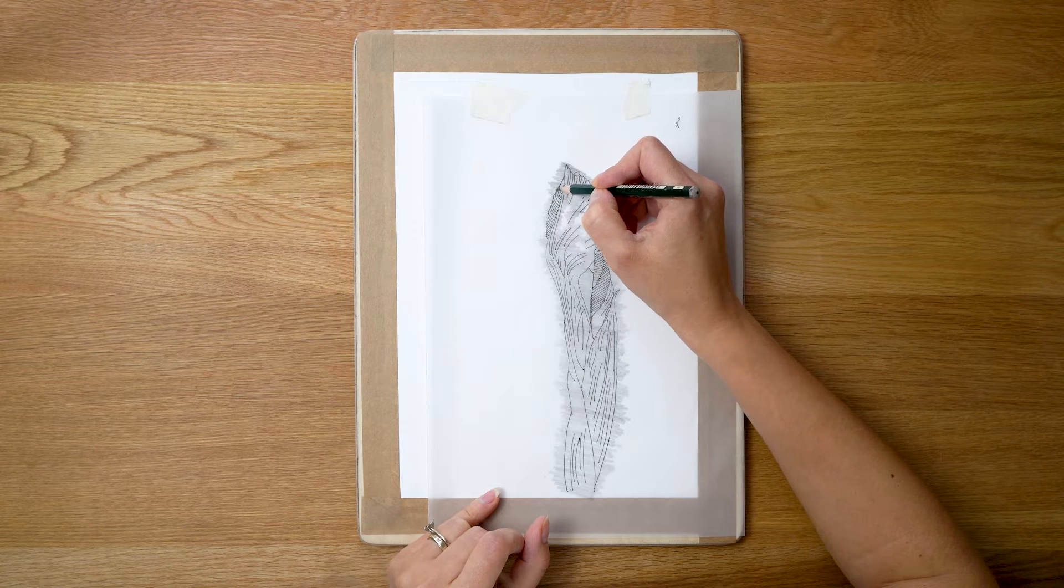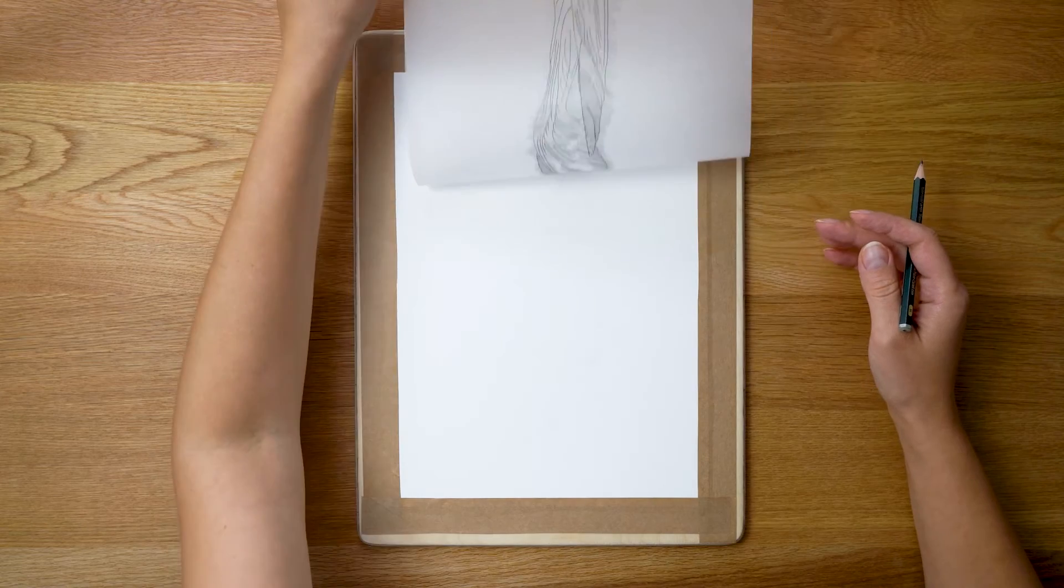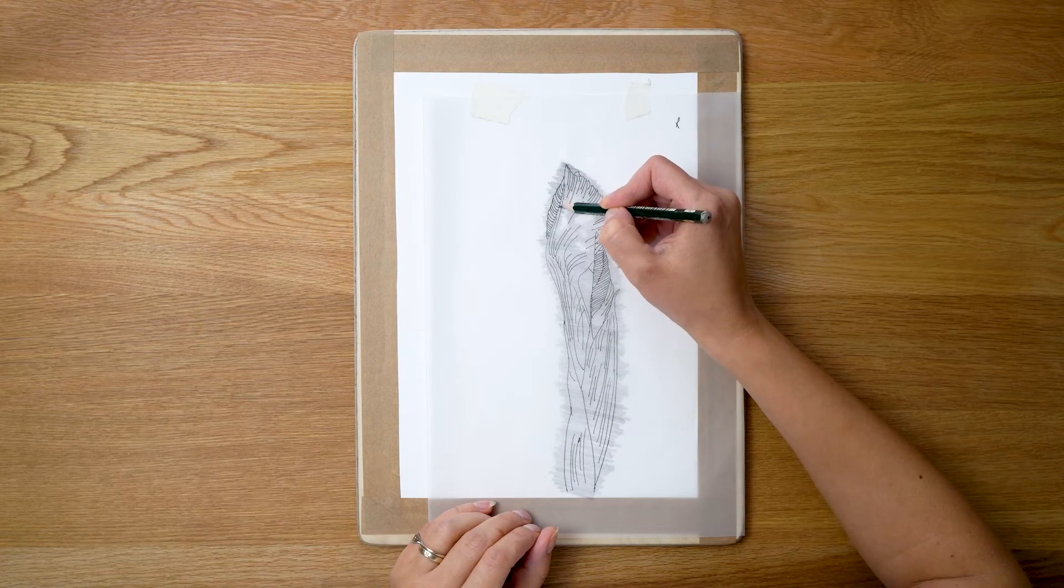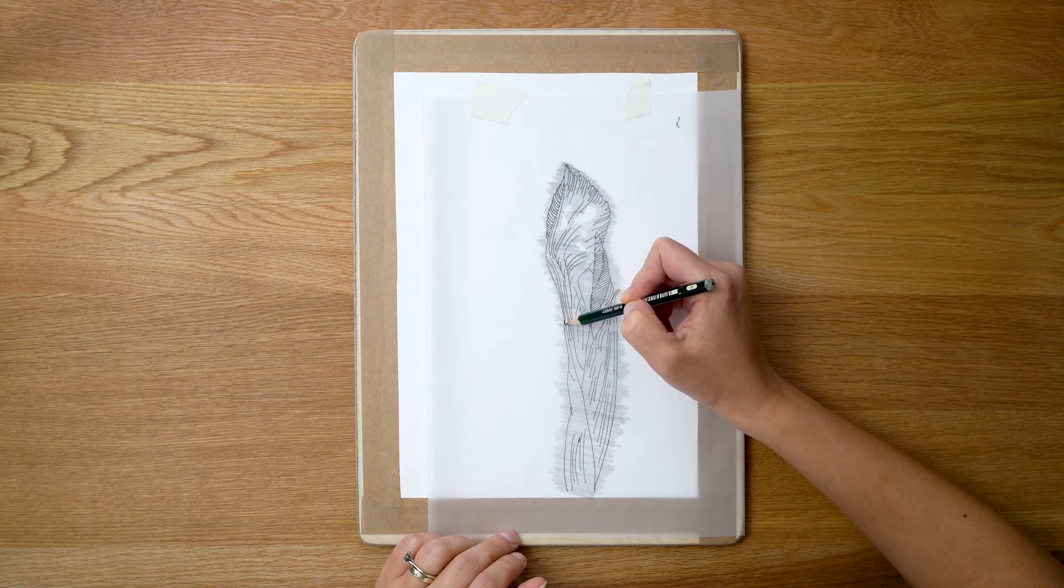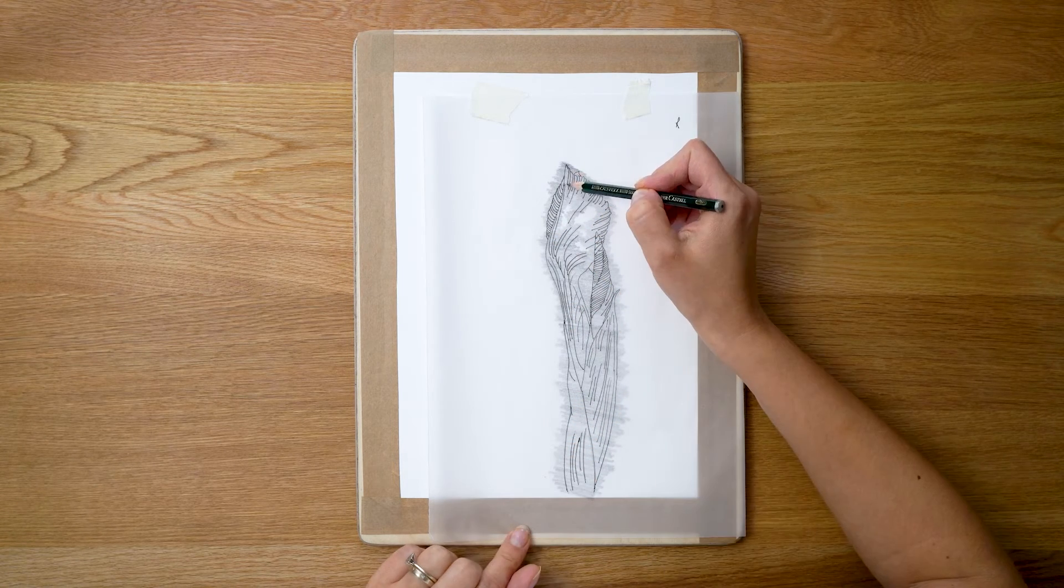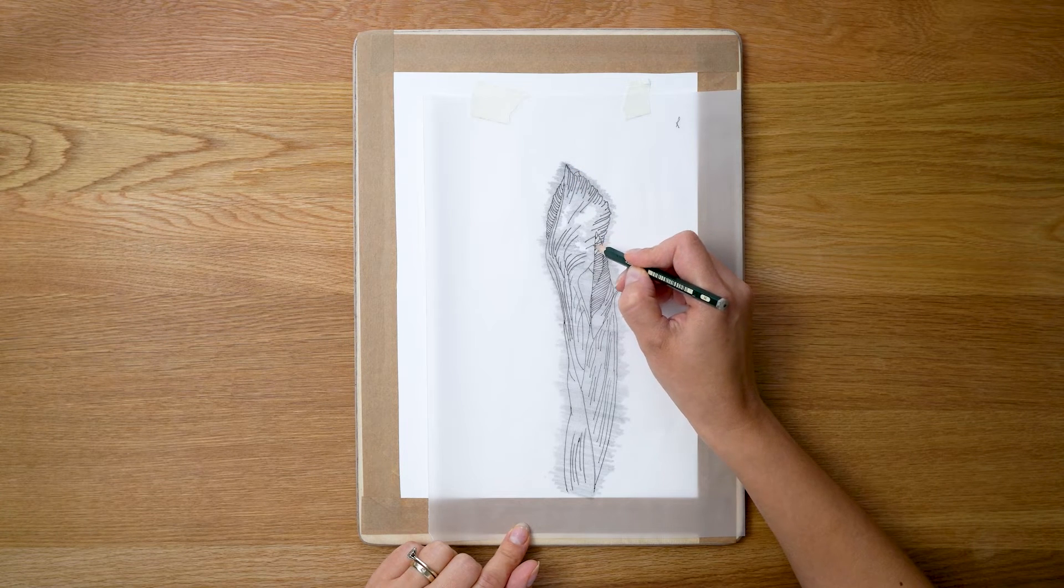You want to use minimal amount of pressure because watercolor paper is very fragile. If you press too hard it can make a dent in the paper and that will become permanent, so you want to use the least amount of pressure for you to still see the drawing as light as possible.